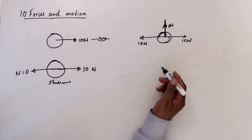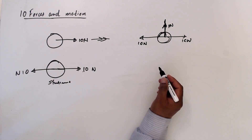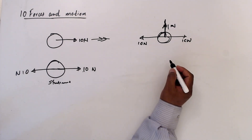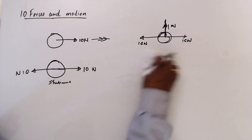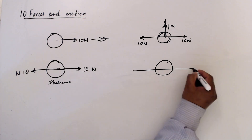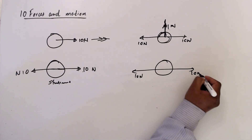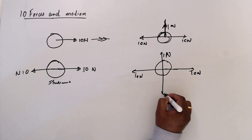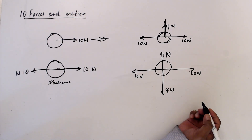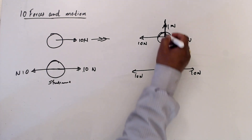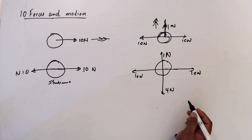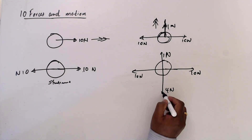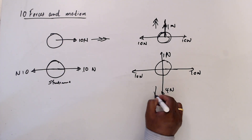So the particle is moving along the y-axis and this is 1 Newton. For the same particle we have 10 here, 10 here, 1 here, and in this direction if I put 4 Newton, then which direction is this moving? Earlier it was moving along the y-axis. Now it is not moving as usual in any one direction. So when you consider 1 and 4, the total is 3 in this direction — 4 minus 1.